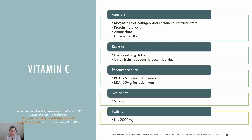Vitamin C, also known as ascorbic acid, is a water-soluble vitamin and antioxidant that we are unable to synthesize. Vitamin C is needed for biosynthesis of collagen, which is a component of connective tissue, and needed for wound healing and certain neurotransmitters. It is also involved in protein metabolism, immune function, and increases the absorption of non-heme iron. The best sources of vitamin C are fruits and vegetables, with the highest concentration in citrus fruits, tomatoes, peppers, broccoli, and berries. The RDA for vitamin C is 75 mg for adult women and 90 mg for adult men.